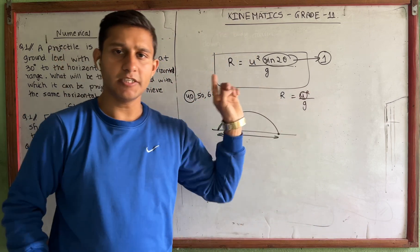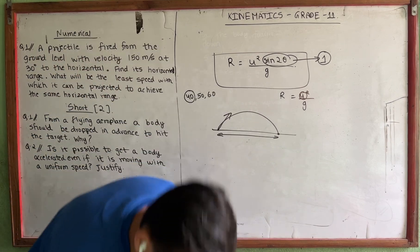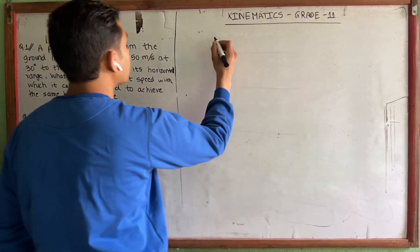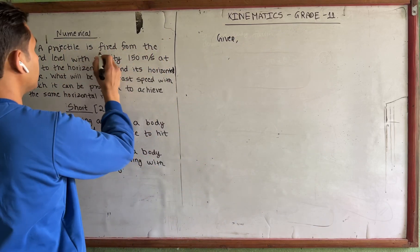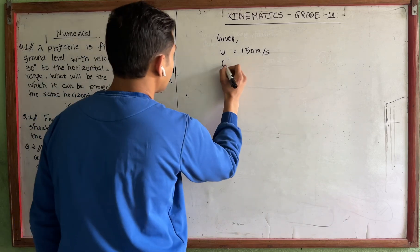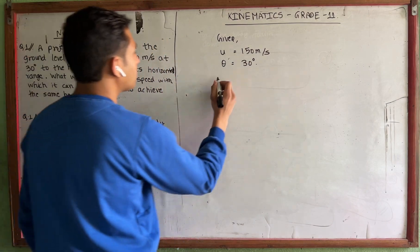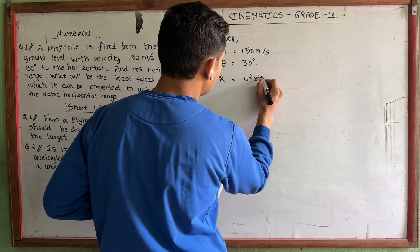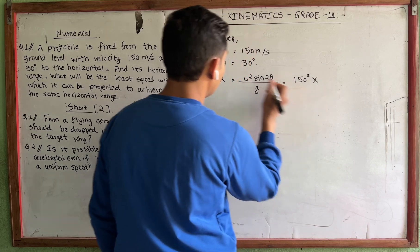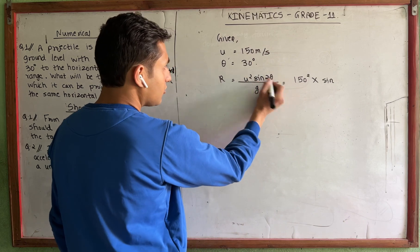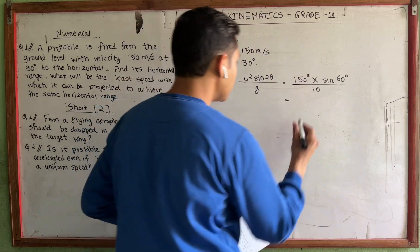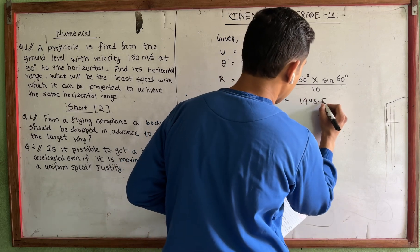So let me drop the board. First, the given values: the projectile initial velocity u is 150 meters per second, and the angle theta is 30 degrees. So we can find the first value of R using the formula. R equals u squared into sine 2 theta divided by g. Substituting: 150 squared into sine of 2 times 30, which is sine 60, divided by g. The value of R comes out to 1948.56 meters.